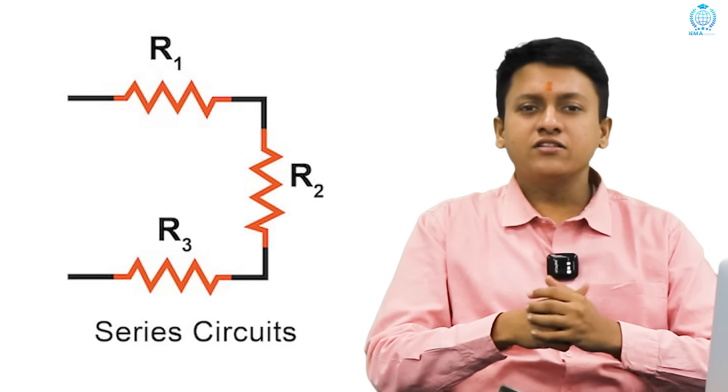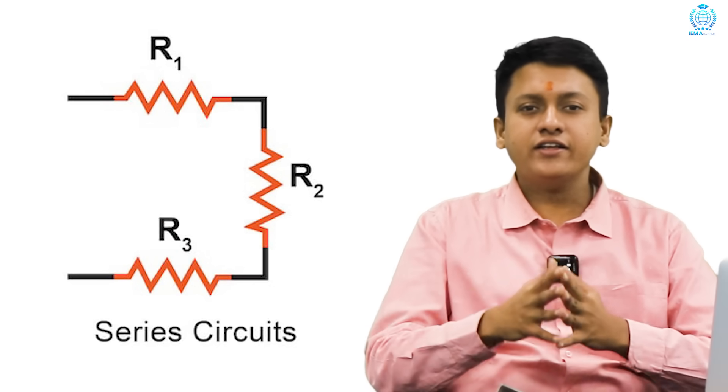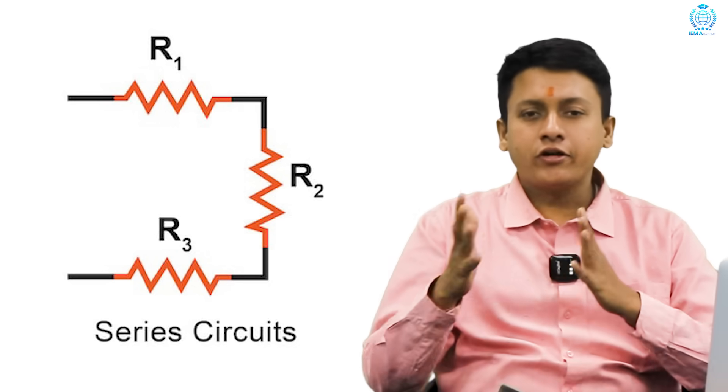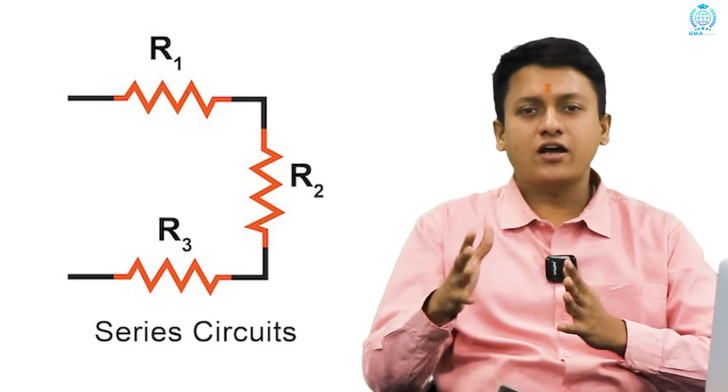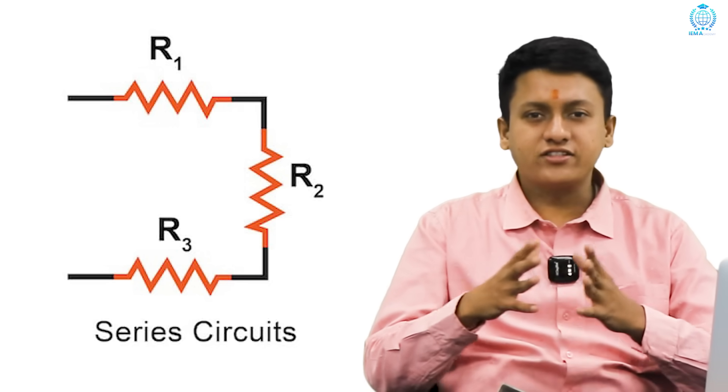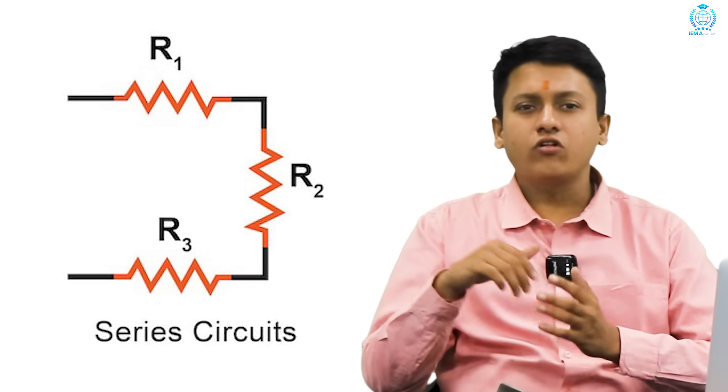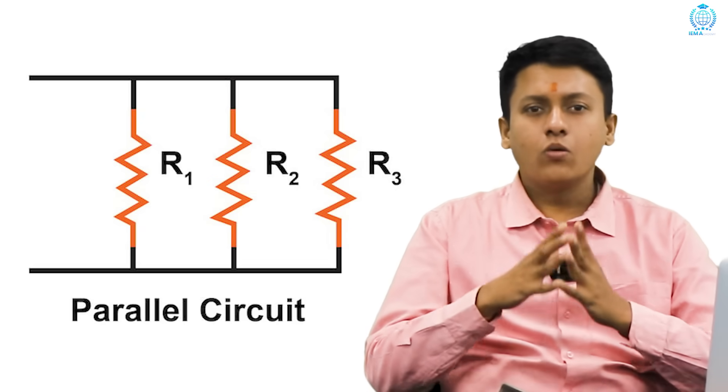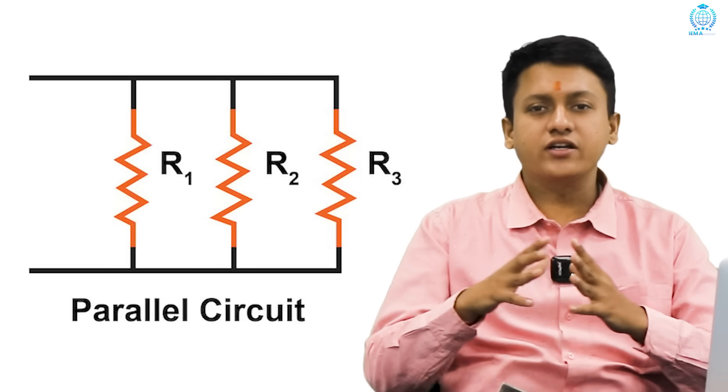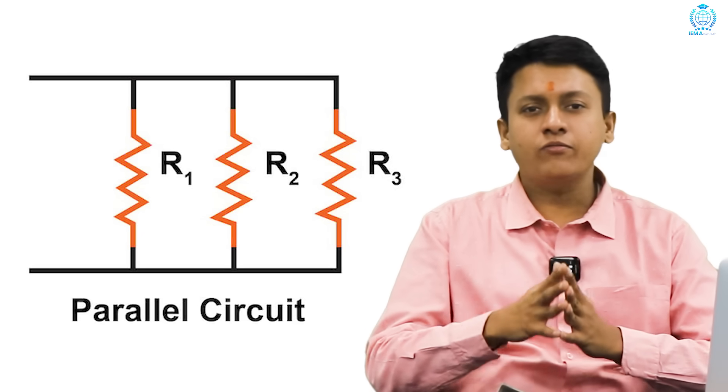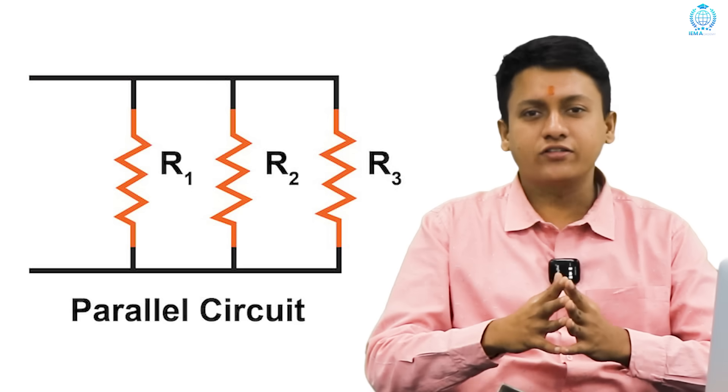series and parallel circuits. Series circuit where the current is the same everywhere. Total resistance is R1 plus R2 plus R3. For example, decorative lights. One bulb fails, all go off. Parallel circuit. Voltage is the same across branches. 1 by R equals 1 by R1 plus 1 by R2 plus 1 by R3.